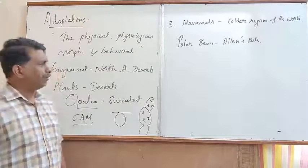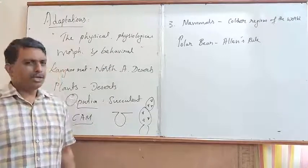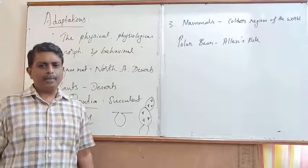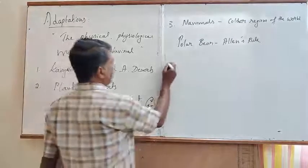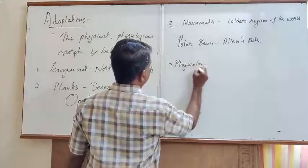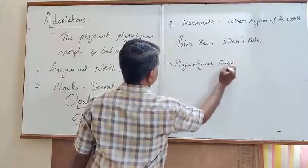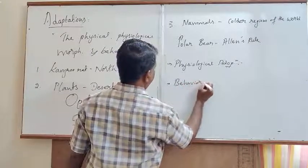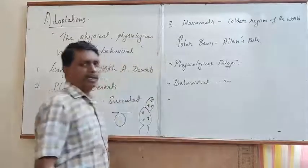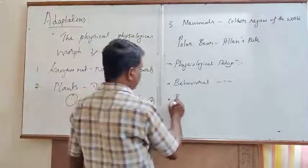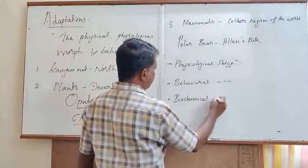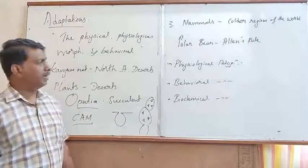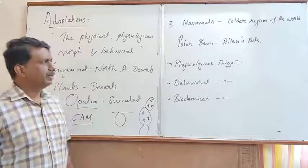The next important aspect is with reference to the types of adaptations. There are three types of adaptations, namely: physiological adaptation, biochemical adaptation, and behavioral adaptation. From the point of NCERT, the first important one is called physiological adaptation. If you start to move to higher altitudes, it is purely because of the presence of very less amount of oxygen at higher altitudes.